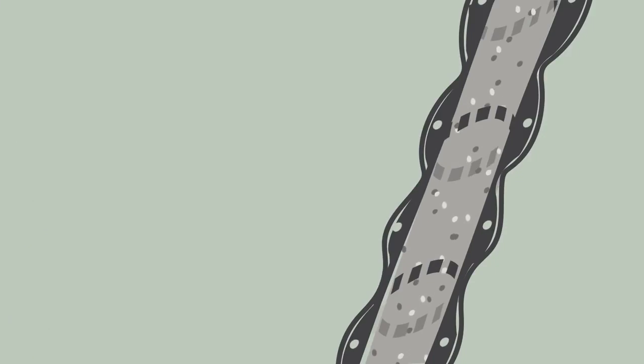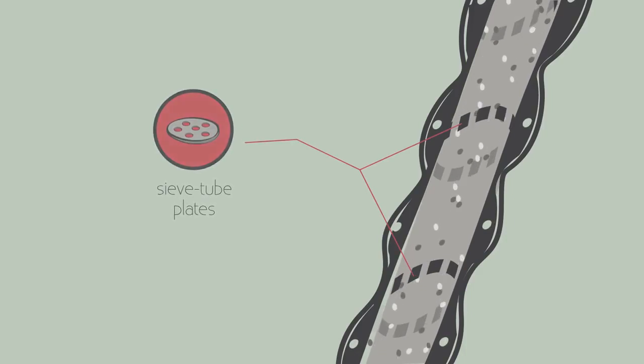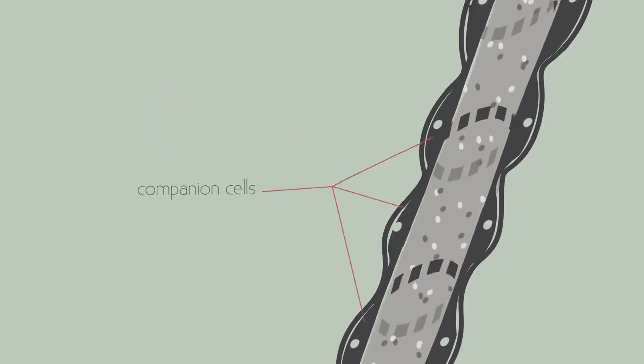We don't need to know much about the phloem, but just be aware that they contain sieve tube plates, which the phloem sap travels through. The neighbouring companion cells provide the sieve tube elements with the energy they need for the active transport.